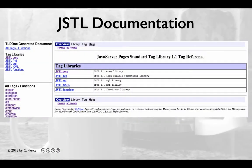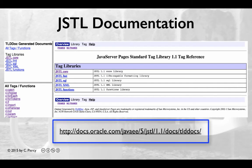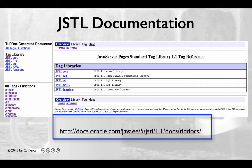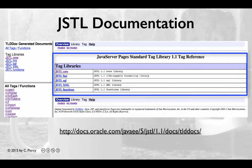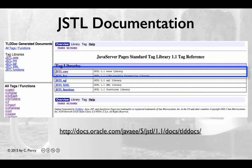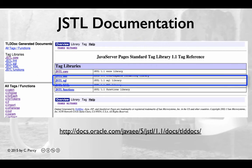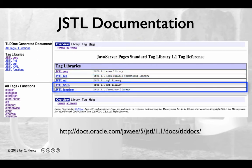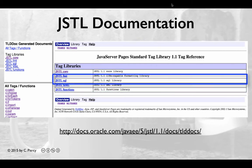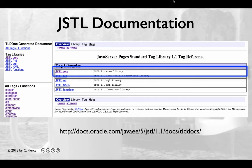The documentation for the Java Server Pages Standard Tag Library can be found at the URL shown here. This is the primary reference for learning about and understanding the tags of the JSTL. The library is organized into five sections: Core, Formatting, Database, XML, and Functions. In this video, we will take a brief look at each of the tags in the core section of the JSTL.